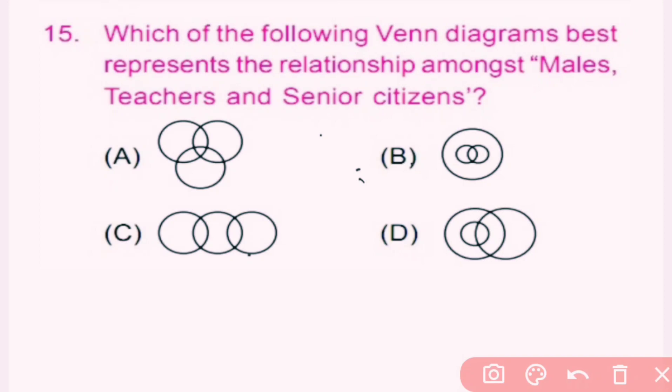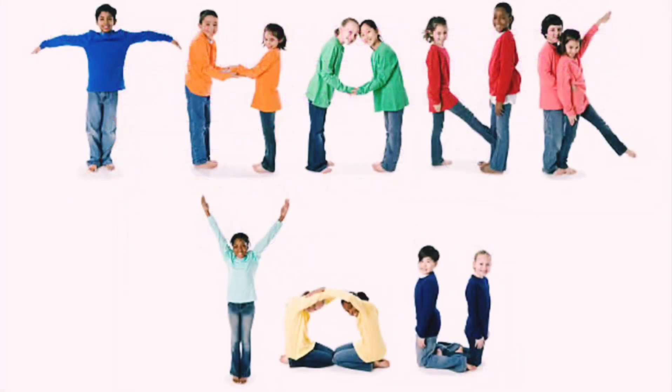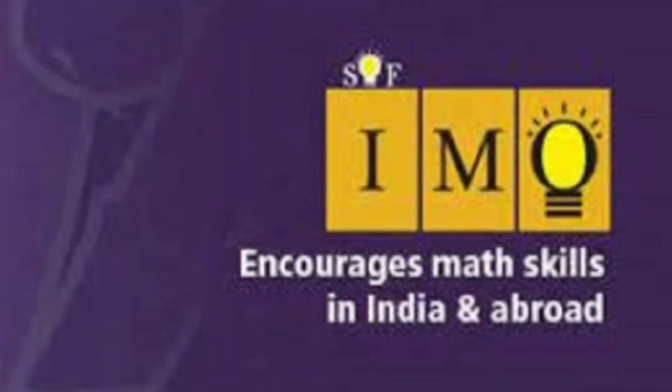Question number 15: Which of the following Venn diagrams best represents the relationship amongst males, teachers, and senior citizens? Males can be teachers and can also be senior citizens, but there is overlap between all groups. A is the correct answer. Thank you for watching. I hope you liked the video. Do practice well and please don't forget to subscribe to my channel.